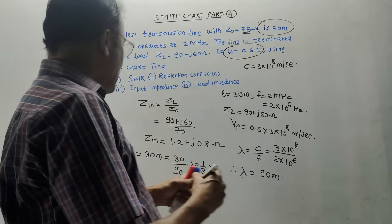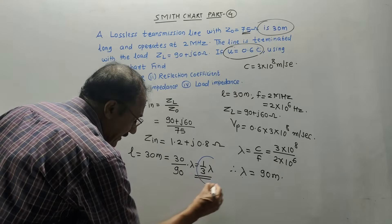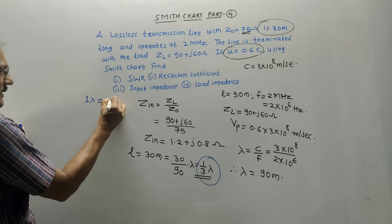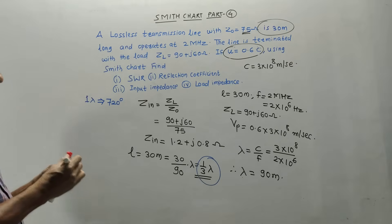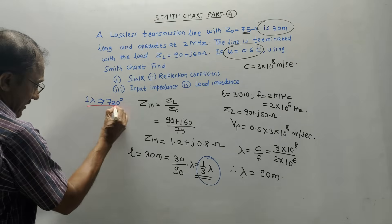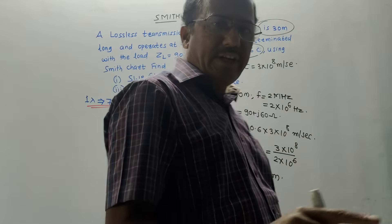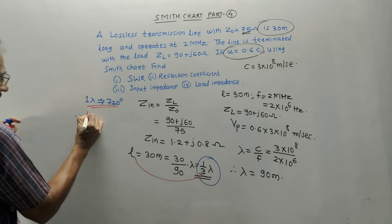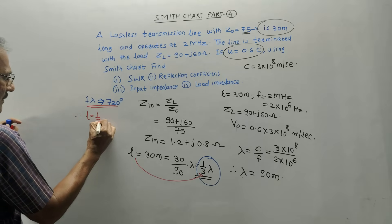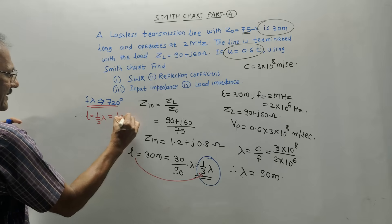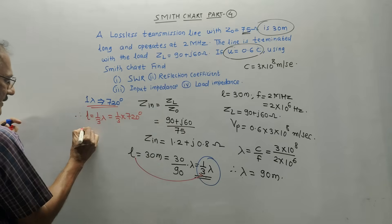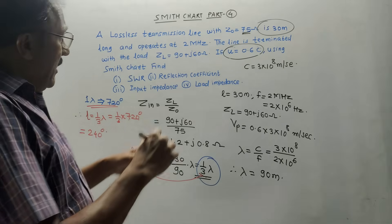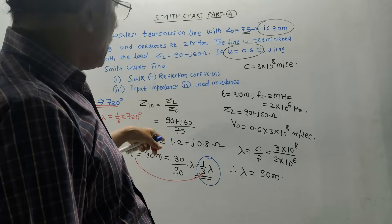An important thing about this value: if we want to convert one-third lambda into degrees, remember that 1 lambda corresponds to 720 degrees on the Smith chart. So the length L of one-third lambda equals one-third into 720 degrees, which is 720 upon 3, giving 240 degrees.